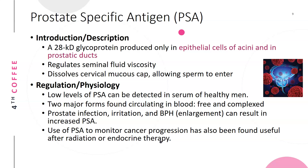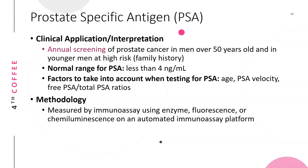PSA is used to monitor cancer progression and has been found useful after radiation or endocrine therapy. Annual screening for prostate cancer in men over 50 years old, and in younger men at higher risk — especially those with a family history — is the major use of PSA. The normal range should be less than 4 nanograms per milliliter. Factors taken into account include age, PSA velocity (how fast it is changing over time), and the free-to-total PSA ratio. PSA is measured by immunoassays using enzyme fluorescence or chemiluminescence on automated immunoassay analyzers.